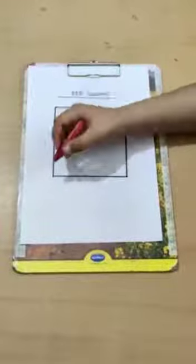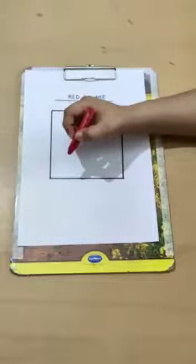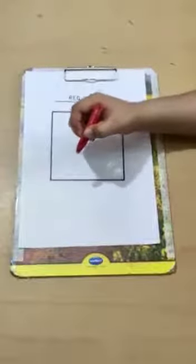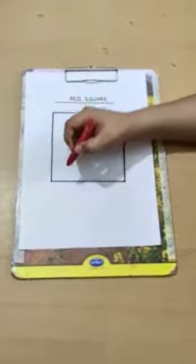Hold the red crayon with your thumb and index finger tightly. Okay, now first step is to do the outline of the square with your red color.